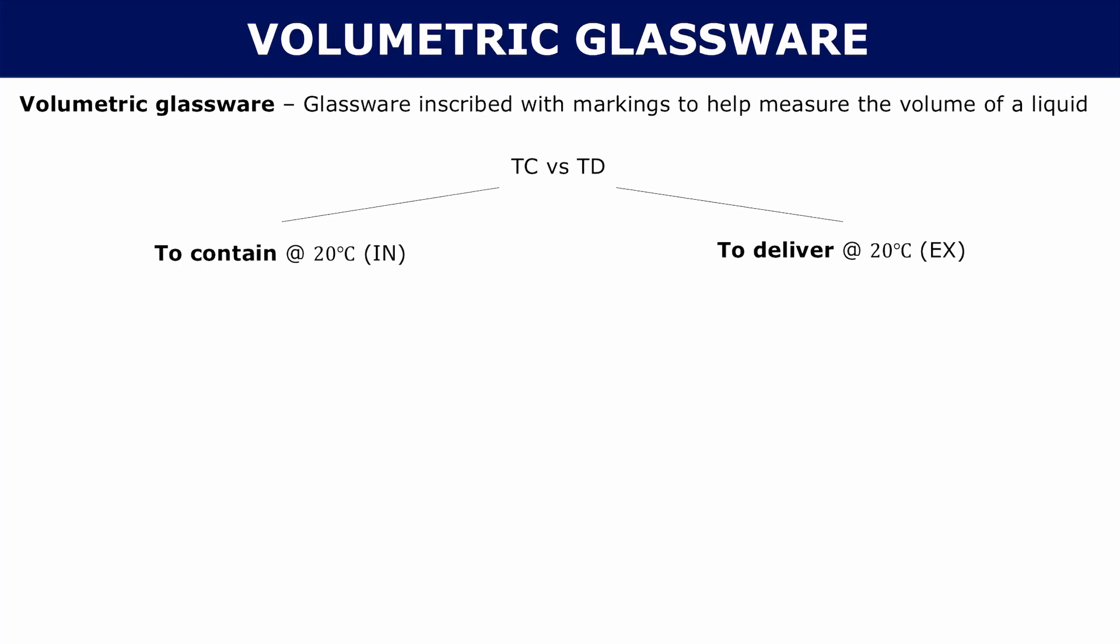You might see it marked as TC or IN, or you might see it marked as TD or EX. The first one is to contain. This is glassware that is designed to hold that exact amount of volume listed. This is different from to deliver because the amount that you dispense, if I hold 100 mils and I go to dispense it, I won't actually dispense 100 mils because sometimes the liquid gets stuck on the sides and whatnot. So you have a degree of error.